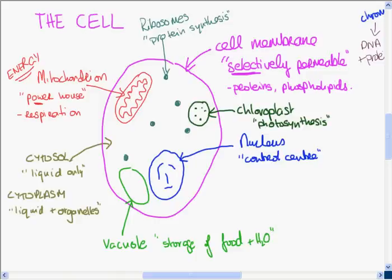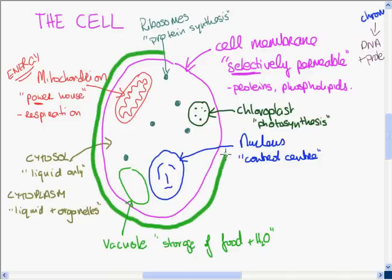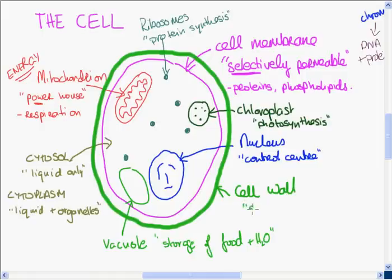The last part that you'll find in a plant cell only is the cell wall. So the cell wall surrounds the entire cell outside of the membrane in the plant cell only. The function of the cell wall is for structure and support. It is made of the biomolecule cellulose. Cellulose is a carbohydrate, it's a polysaccharide.